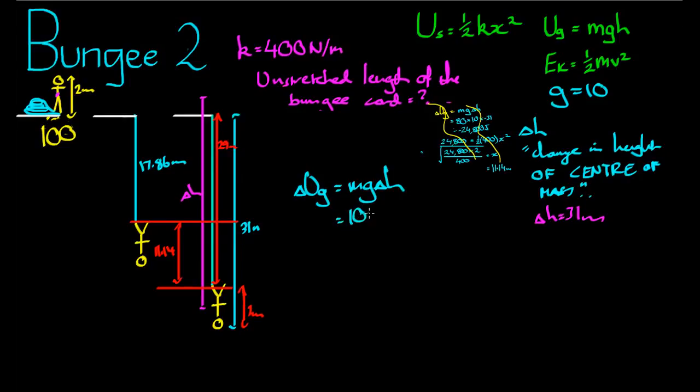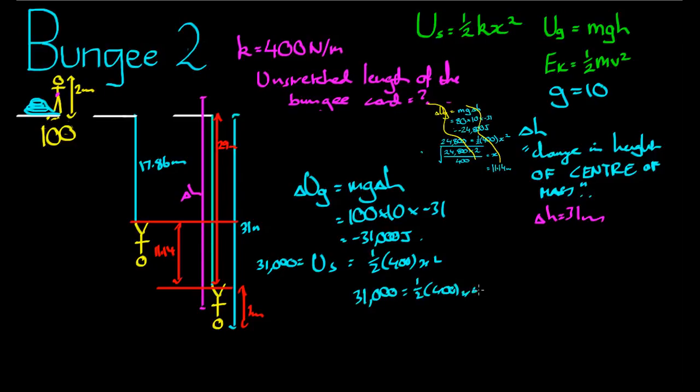Delta UG is 100 times 10 times negative 31, which is equal to negative 31,000 joules. And that must have been equal to the spring potential, a half, 400, x squared. Oh, actually, sorry. The spring potential is equal to positive 31,000. So 31,000 is equal to a half, 400, x squared.